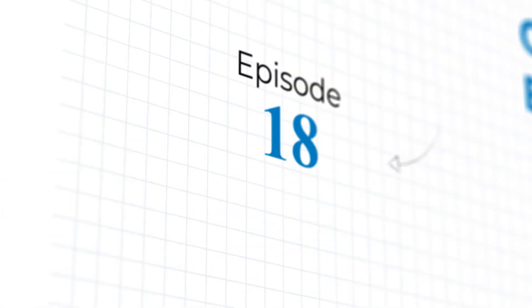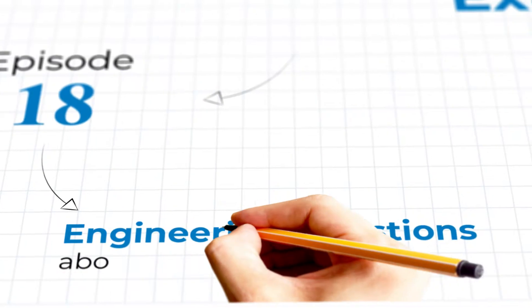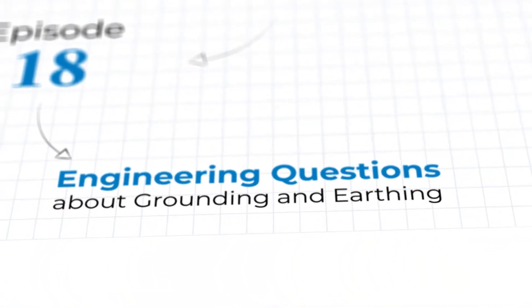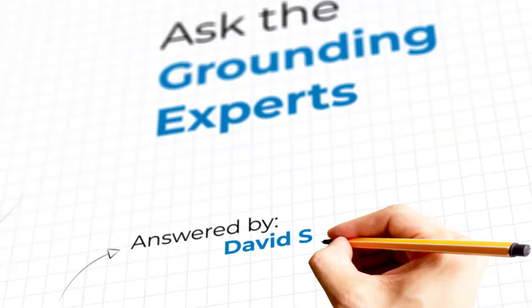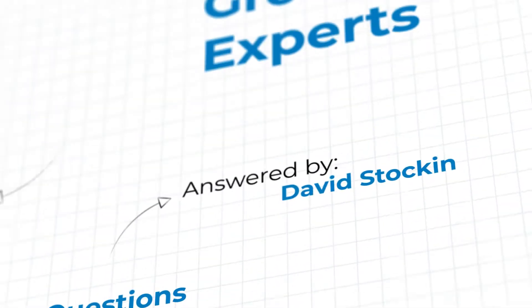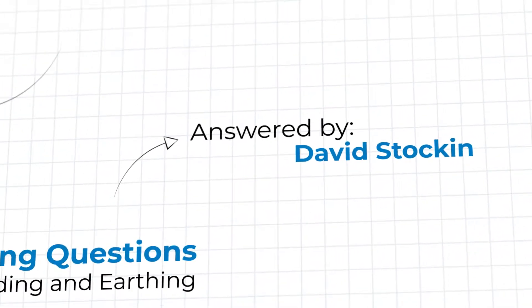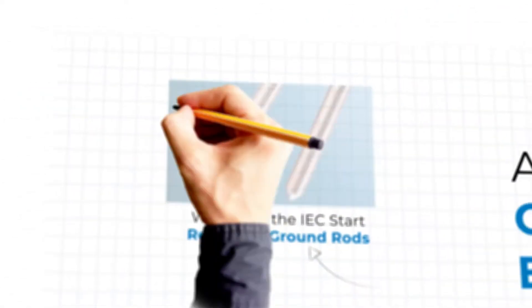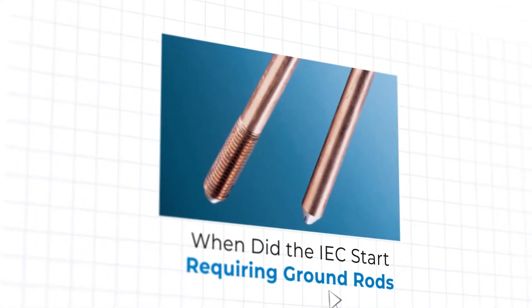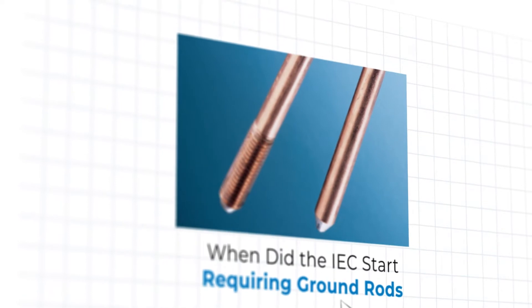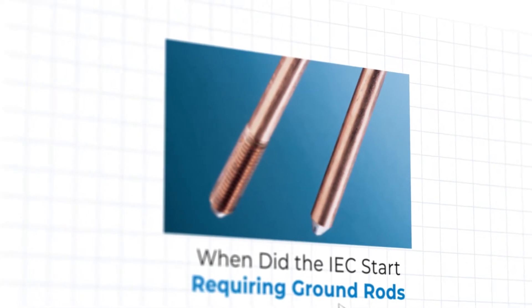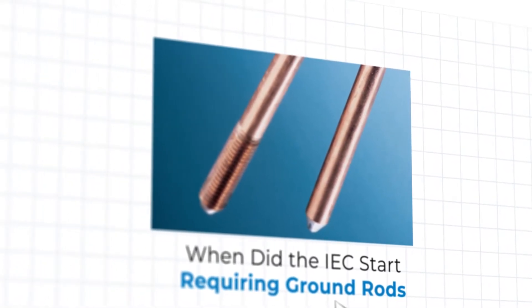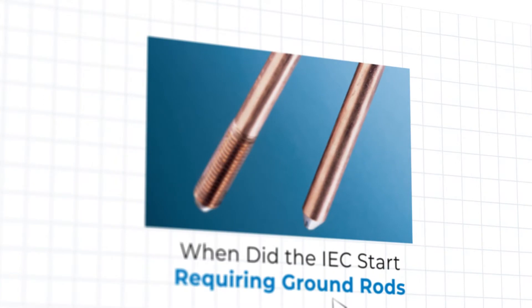Welcome to episode 18 of Ask the Grounding Experts, where our experts from ENS Grounding Solutions answer your engineering questions about the world of grounding and earthing. In this episode, our electrician on a mission, David Stocken, sticks to the facts while answering the question, when did the IEC start requiring ground rods? Fill us in, David.